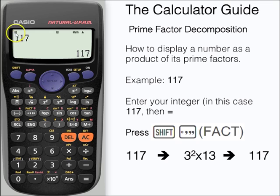Notice how there is a little S displayed in the top left hand corner indicating that the shift function has been activated. And here is our answer: 3 squared times 13.